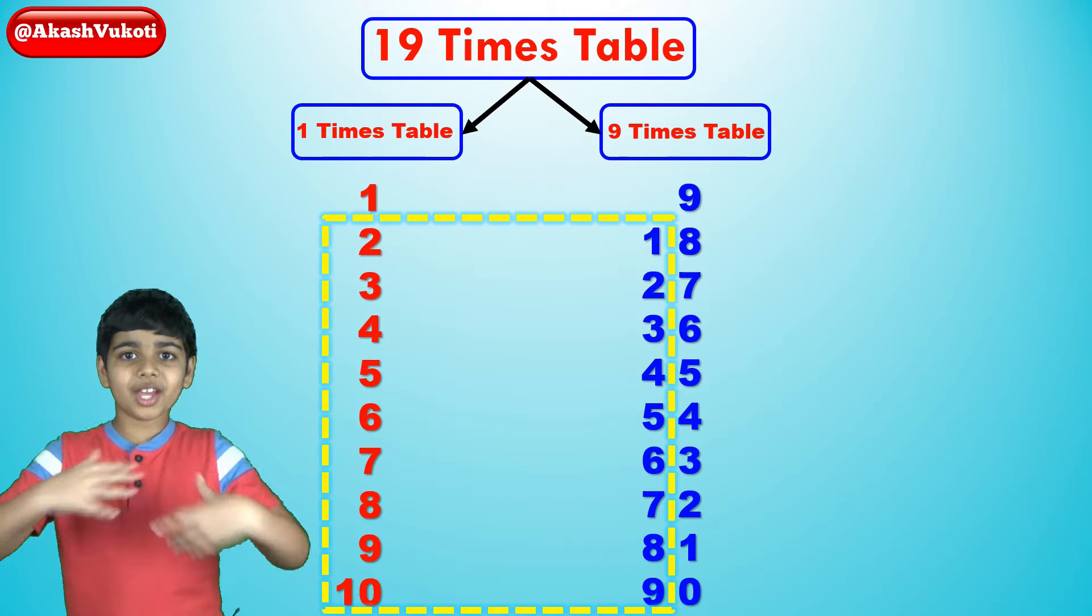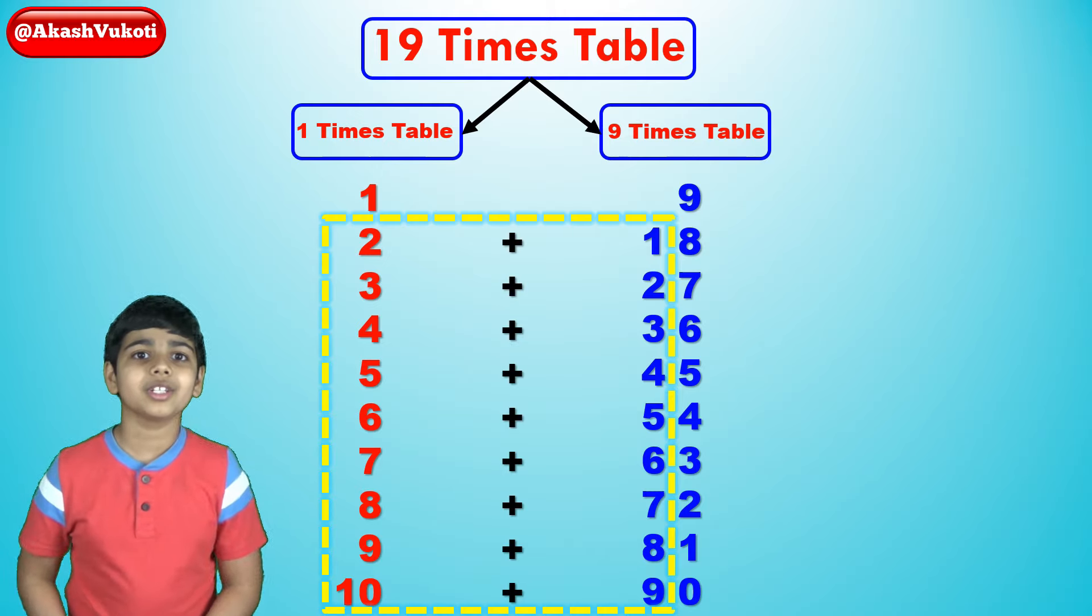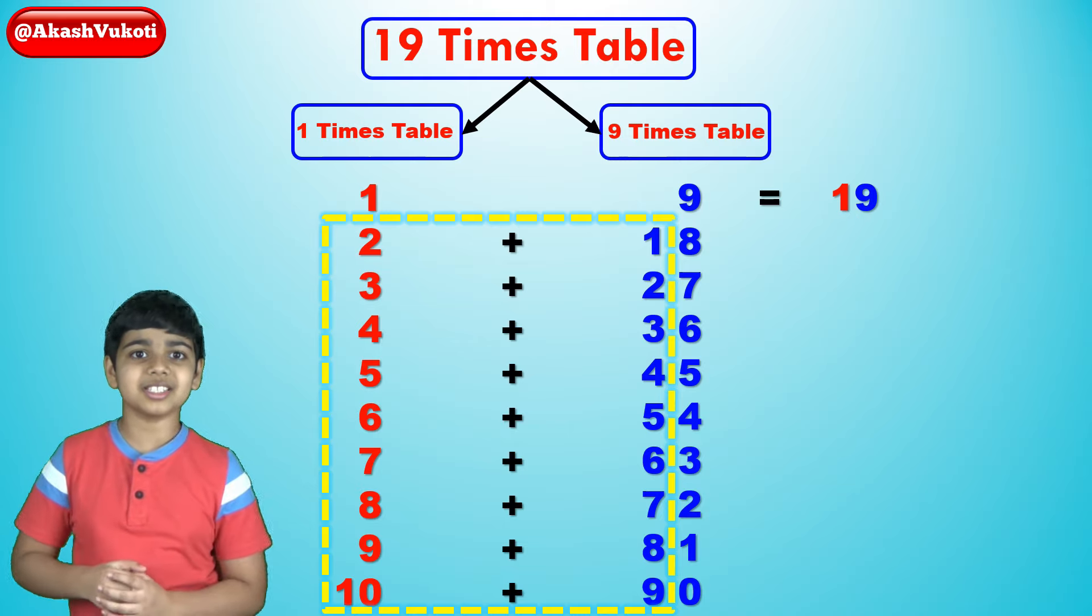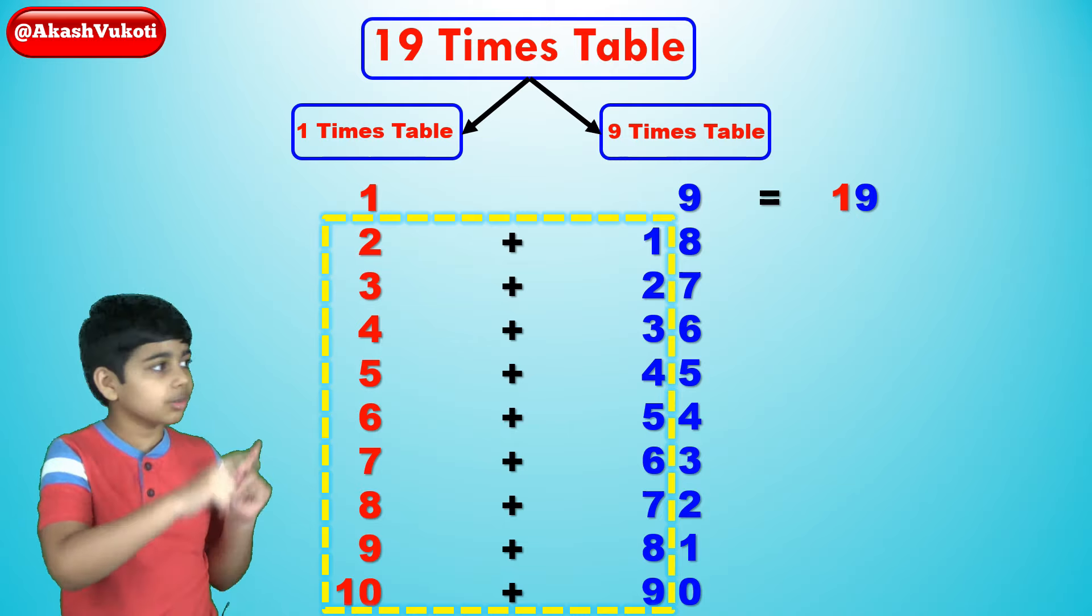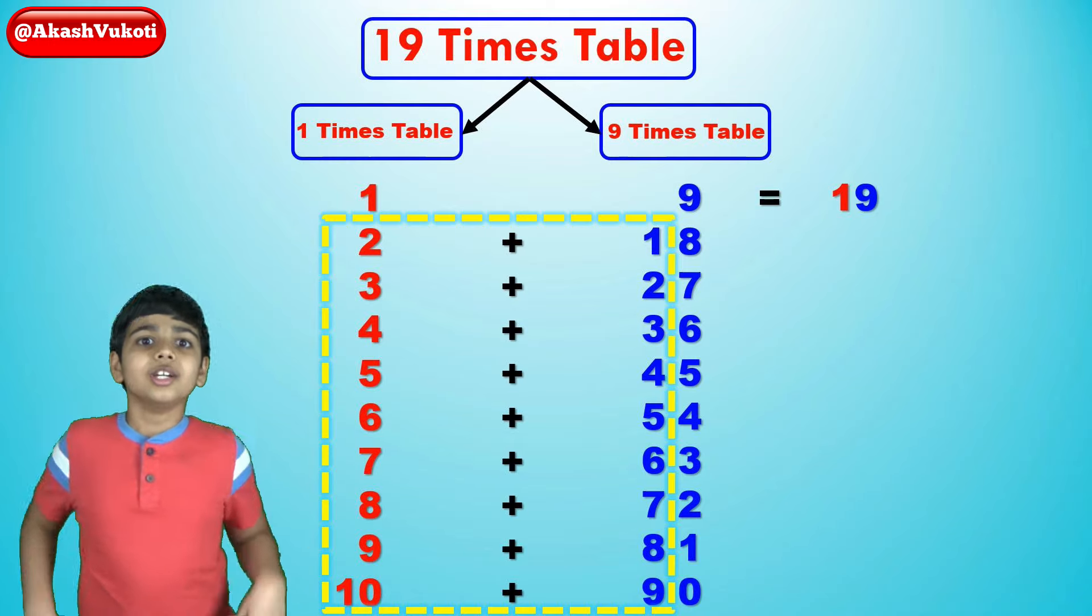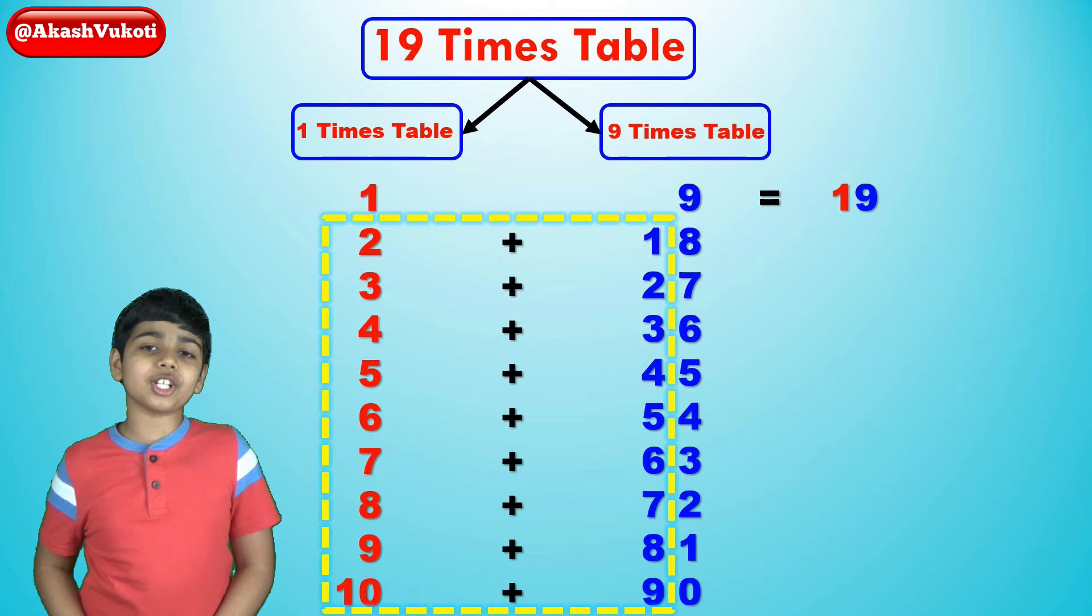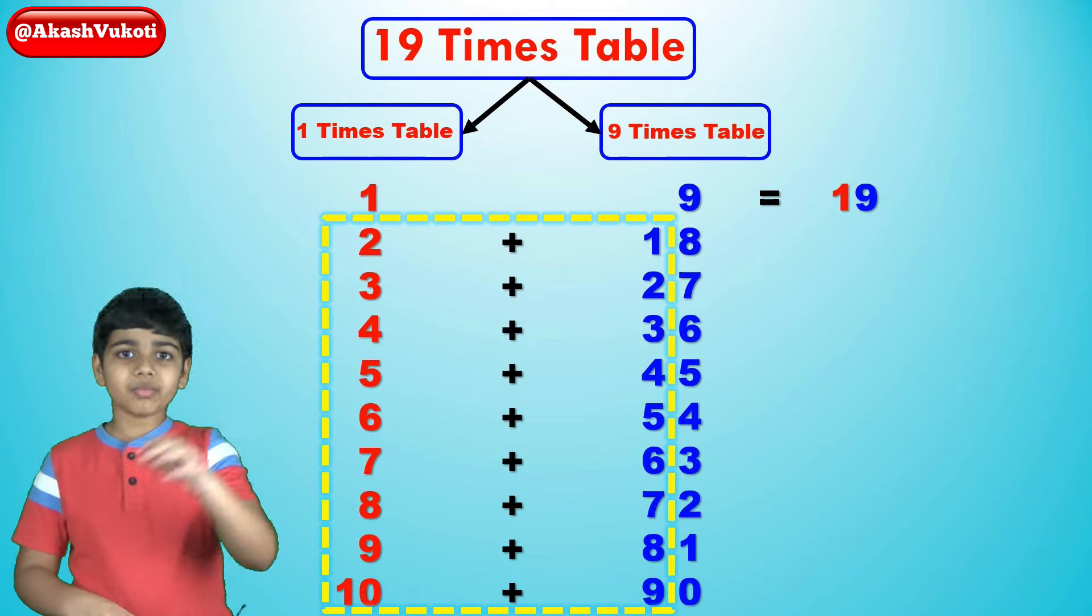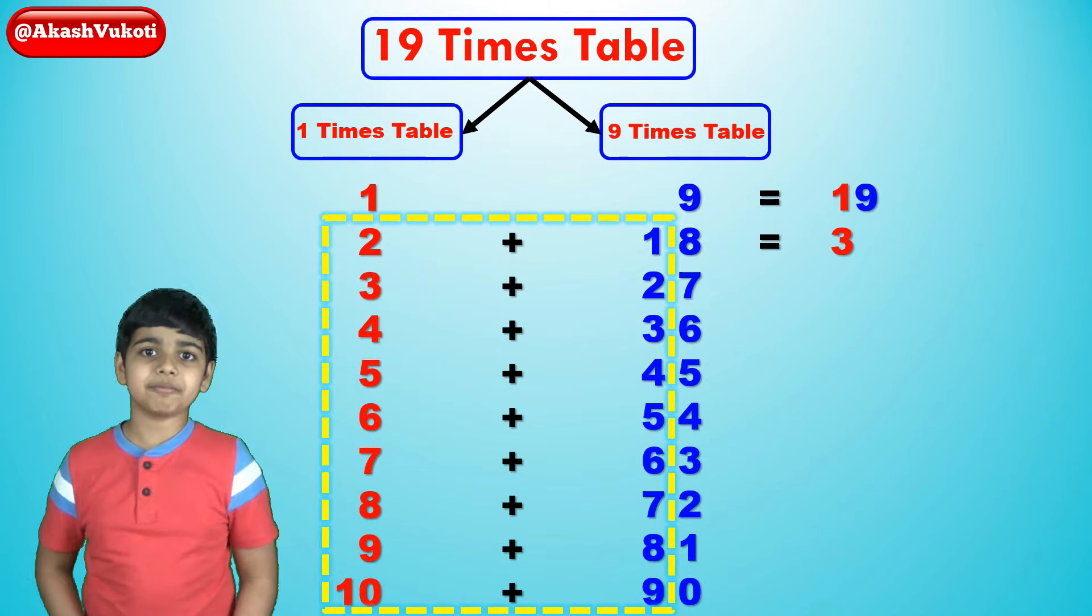Now, just put them together and that is the 19x table. 19x1, that's 1, 9, it's 19. 19x2, look at this, it's 2, 18. 18 is 2 digits. We only have space for 1 digit at the end. So just take the 1 from 18, add it to the 2 to get 3. So 38.